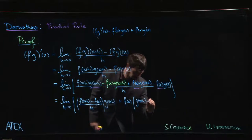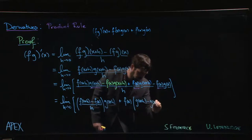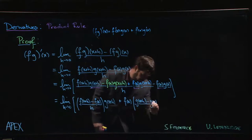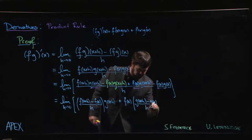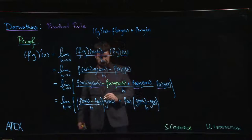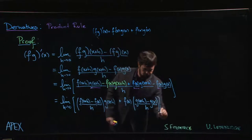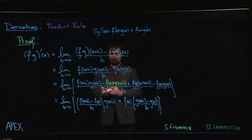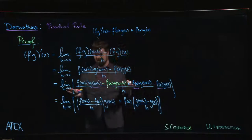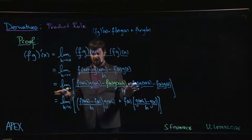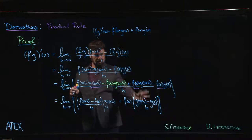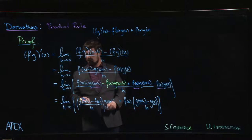Now we have f of x, and what's f of x multiplying? f of x is multiplying g of x plus h minus g of x, and I have to divide by h in the second term. Now you can probably see where things are going. You can start to see the answer.